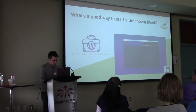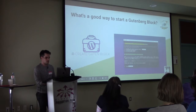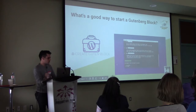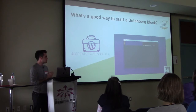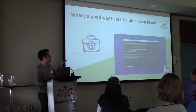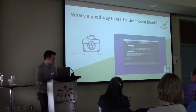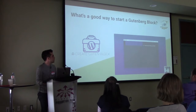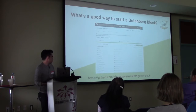Another way to start a Gutenberg block from scratch is using a tool called create-gutenblock by Ahmed Awais. If you're familiar with React, there's a similar tool called create-react-app that gives you the initial structure of a React project — this is the same idea. It uses NPM to get started, creates a basic structure, gives you the name you want, the builders, all the stuff you're going to need. Here's the repo on GitHub if you want to check it out.